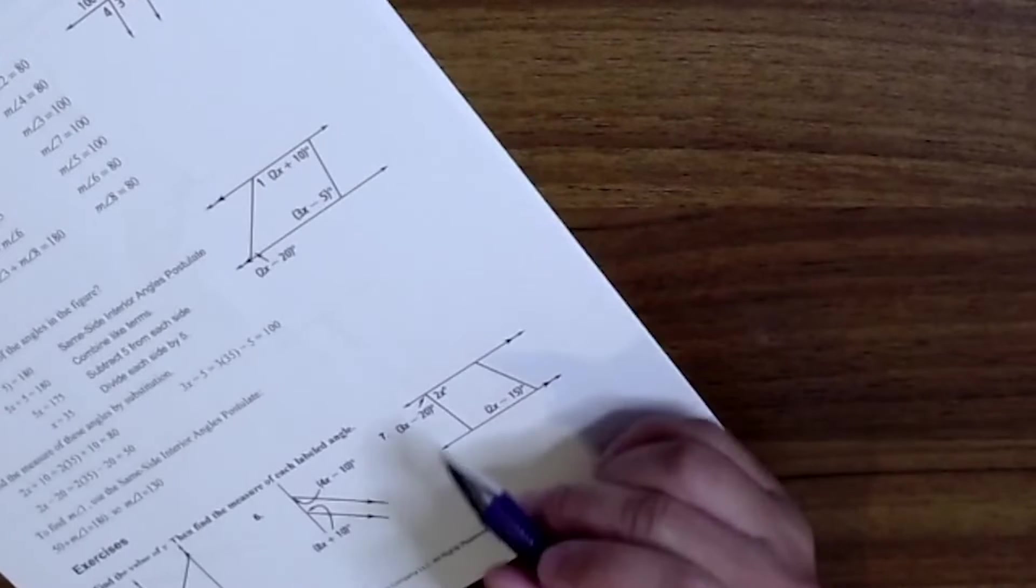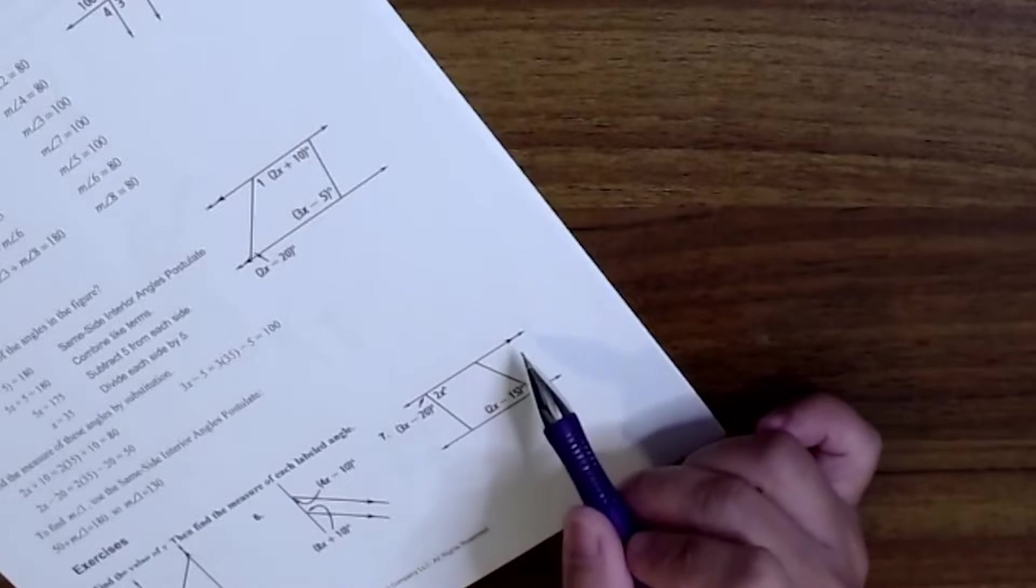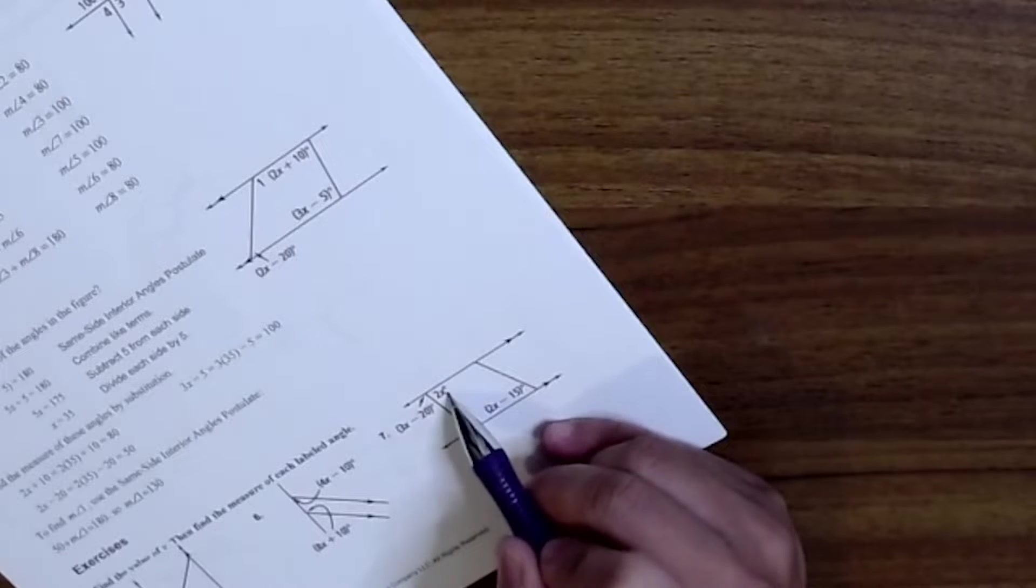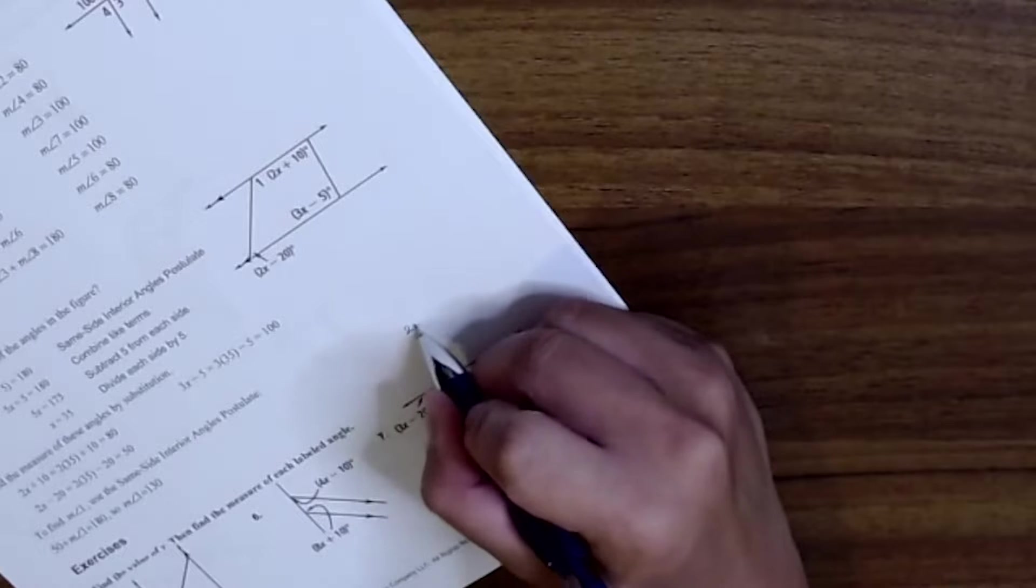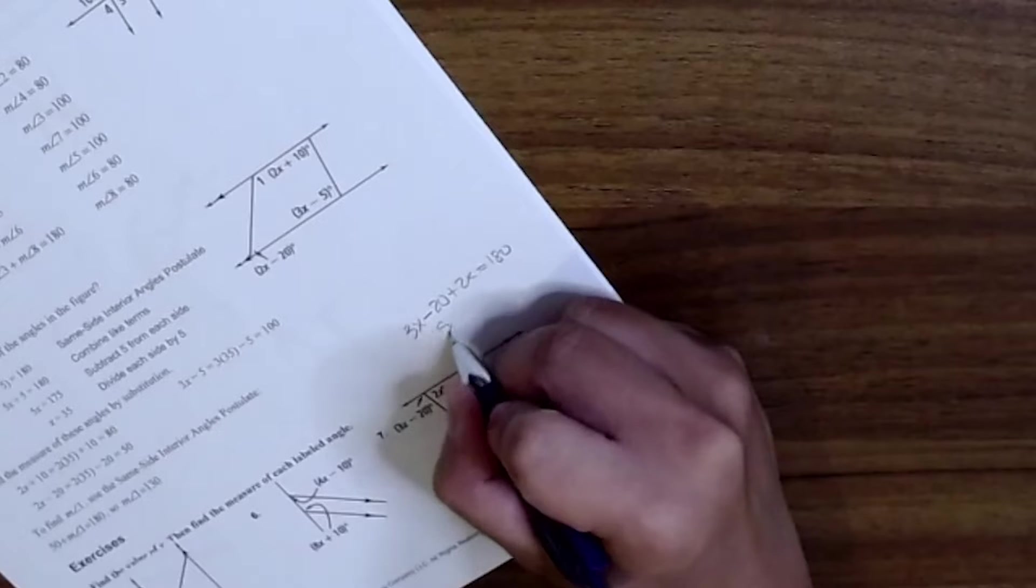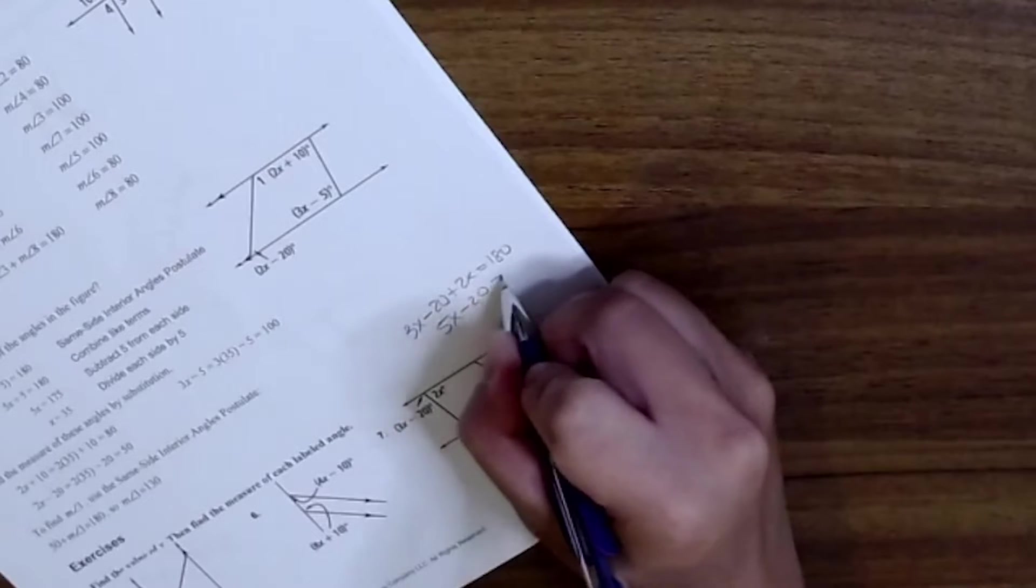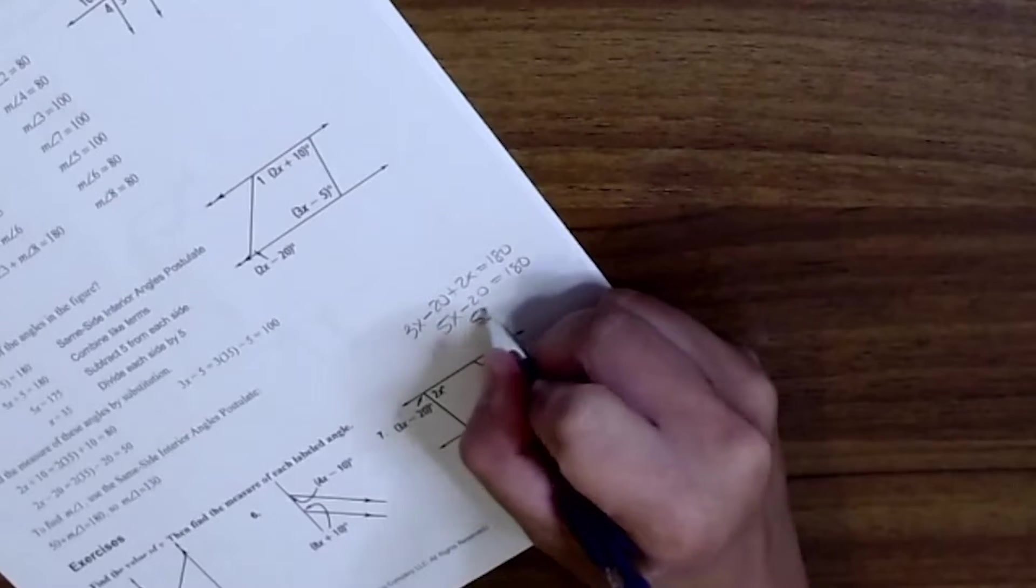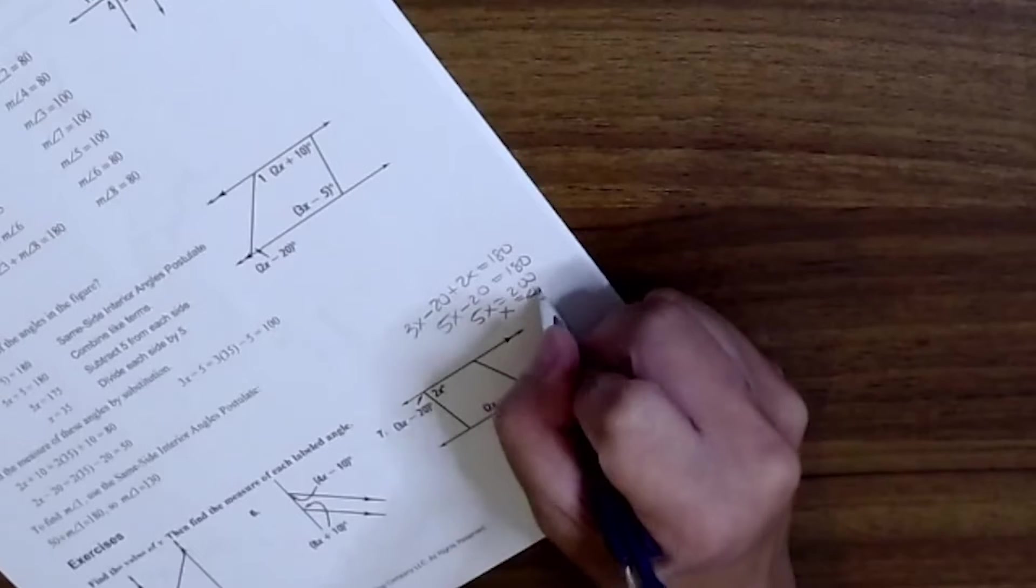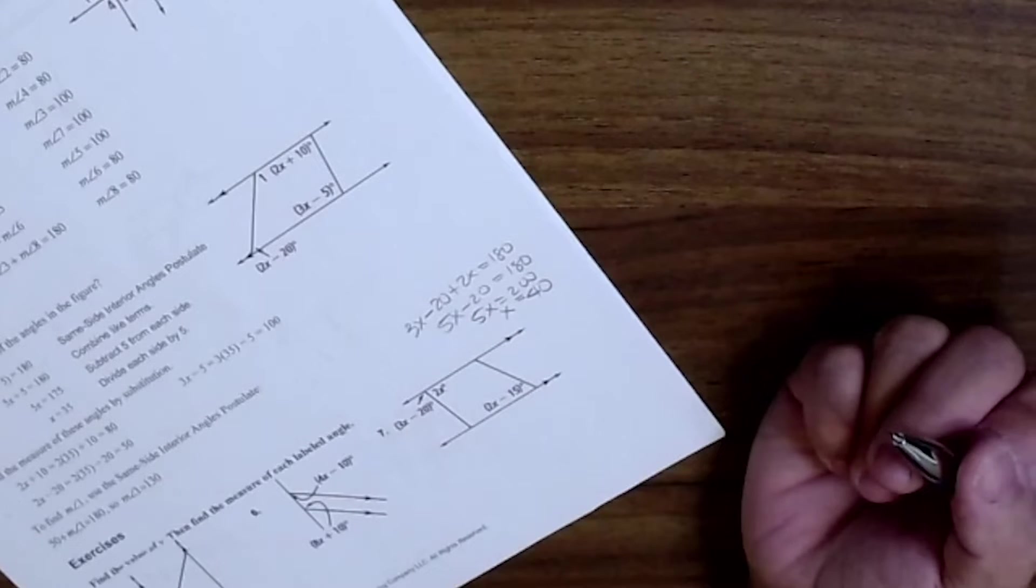So these lines are parallel, and these two make a linear pair. That means that 3x minus 20 plus 2x is equal to 180, so 5x minus 20 is equal to 180, 5x is equal to 200, so x is equal to 40.